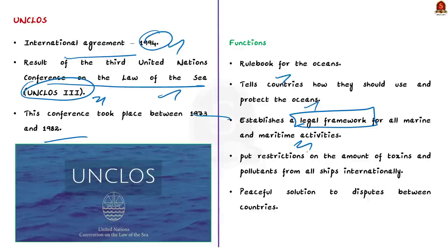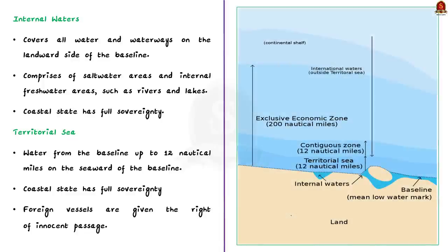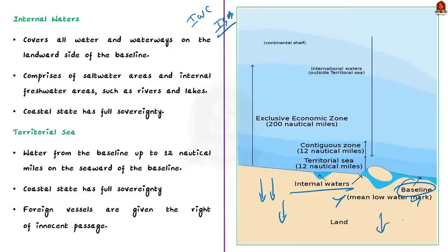UNCLOS also puts up restrictions on the amount of toxins and pollutants that come from all ships internationally. If countries have disagreements about the ocean, UNCLOS provides a way to peacefully resolve disputes. UNCLOS established the International Whaling Commission and the International Seabed Authority. This convention has also set limits for various areas in the seas, measured from a defined baseline. The first zone is internal waters, which covers all water and waterways on the landward side of the baseline. It comprises saltwater areas and internal freshwater areas such as rivers and lakes.